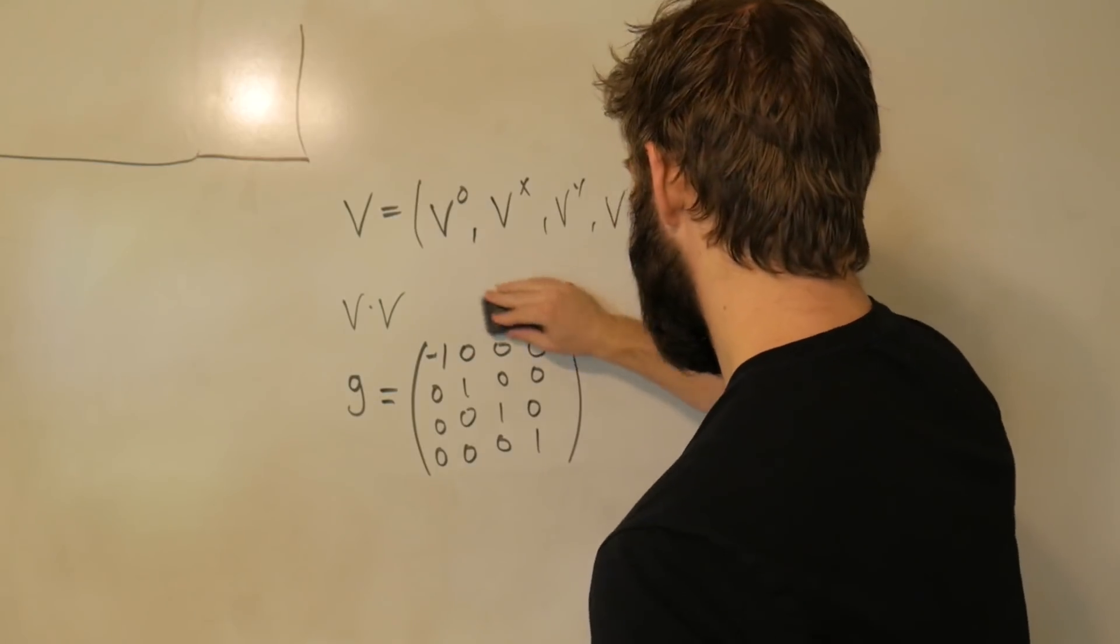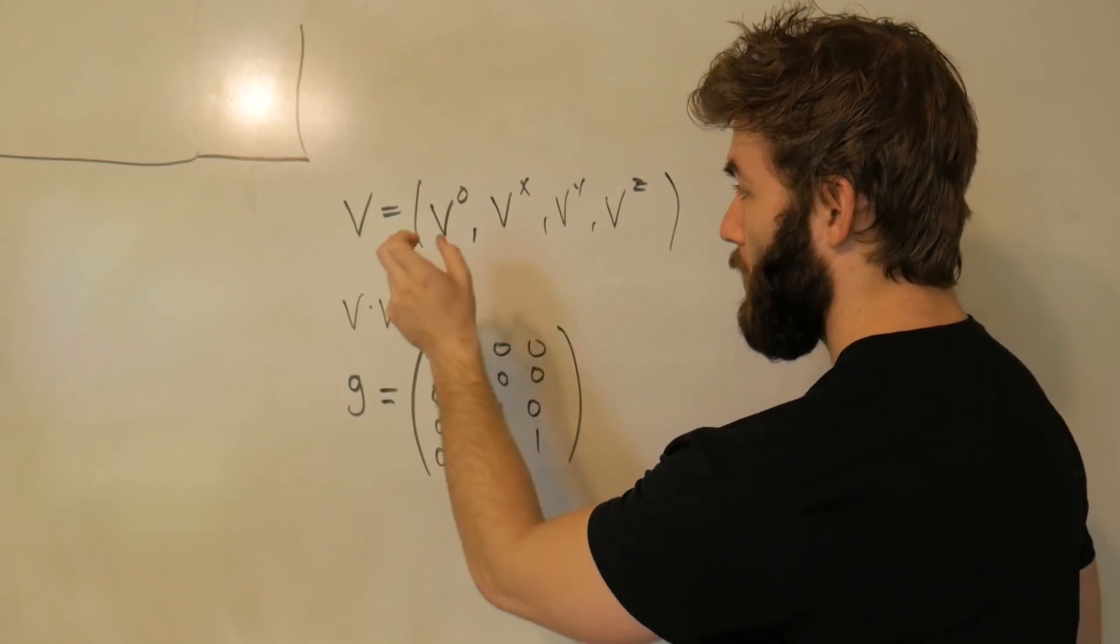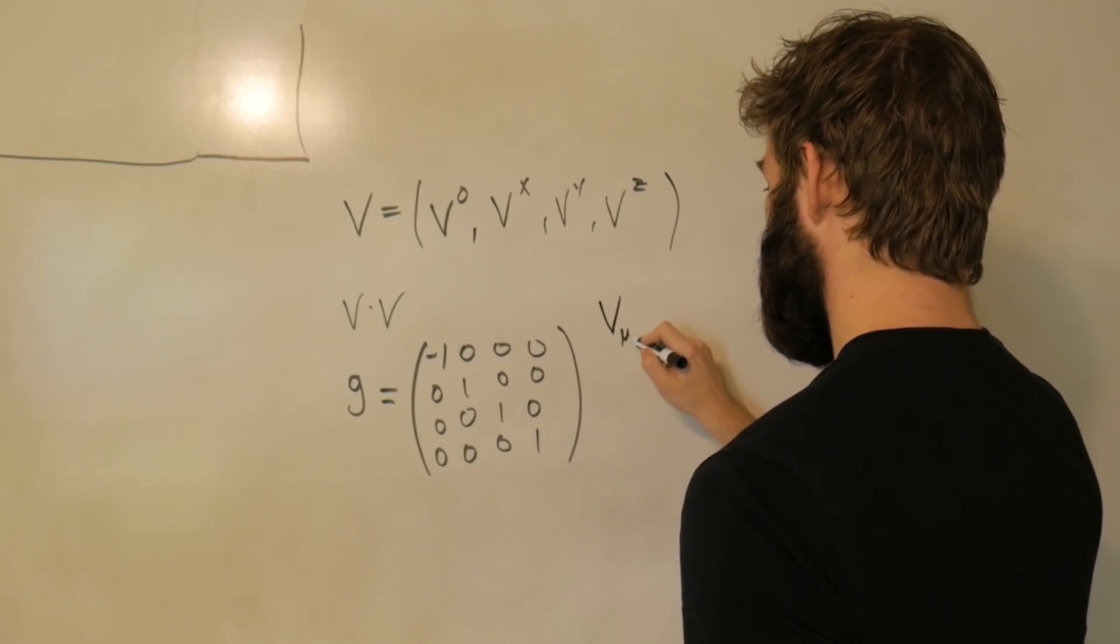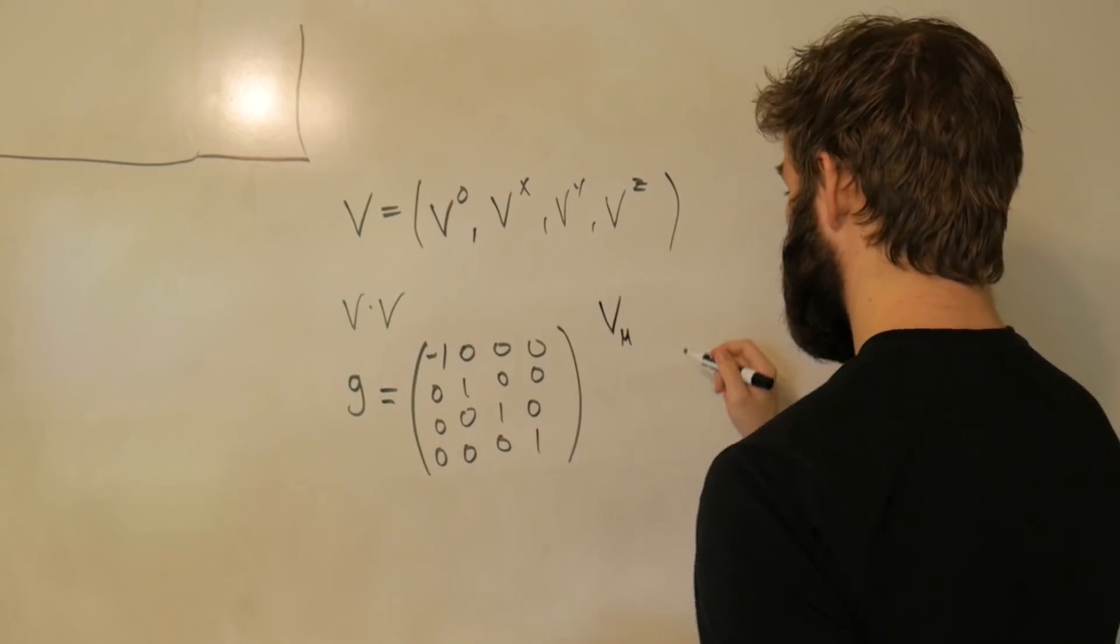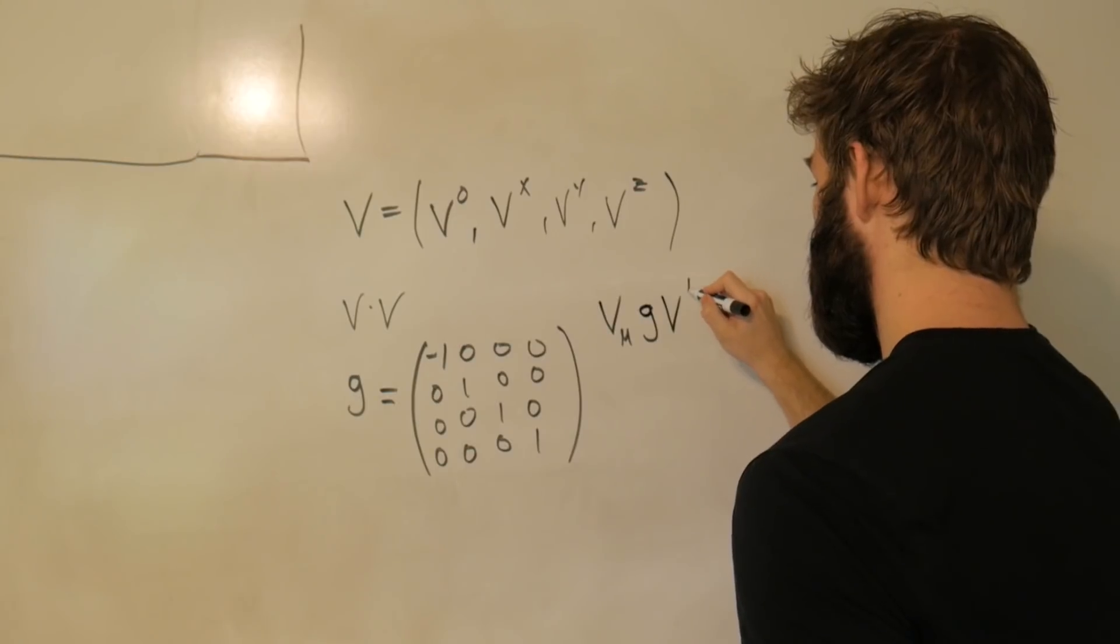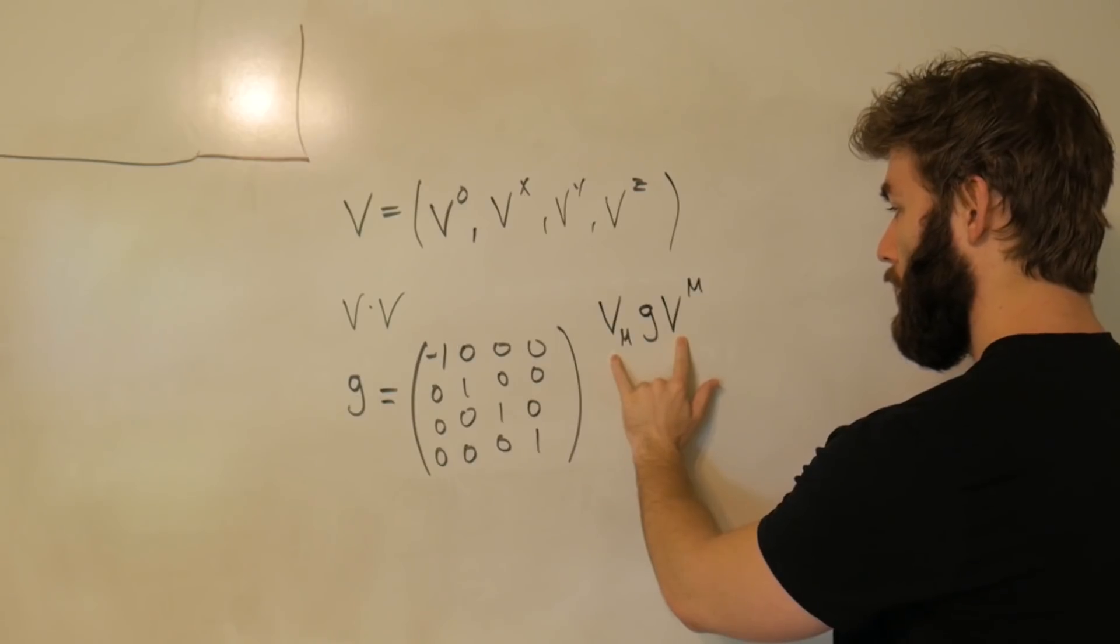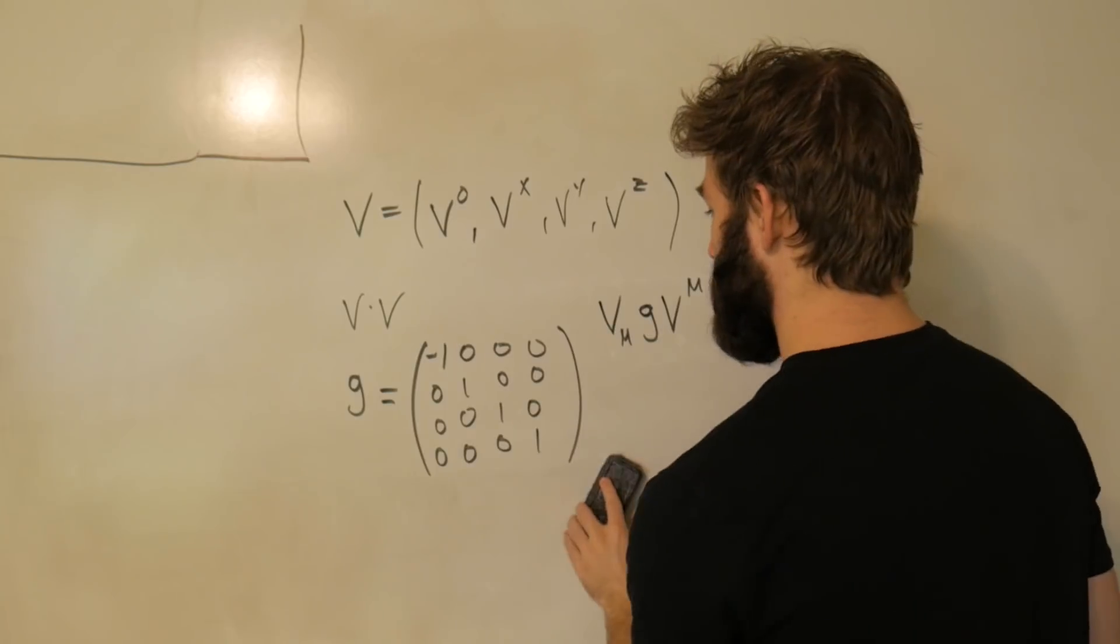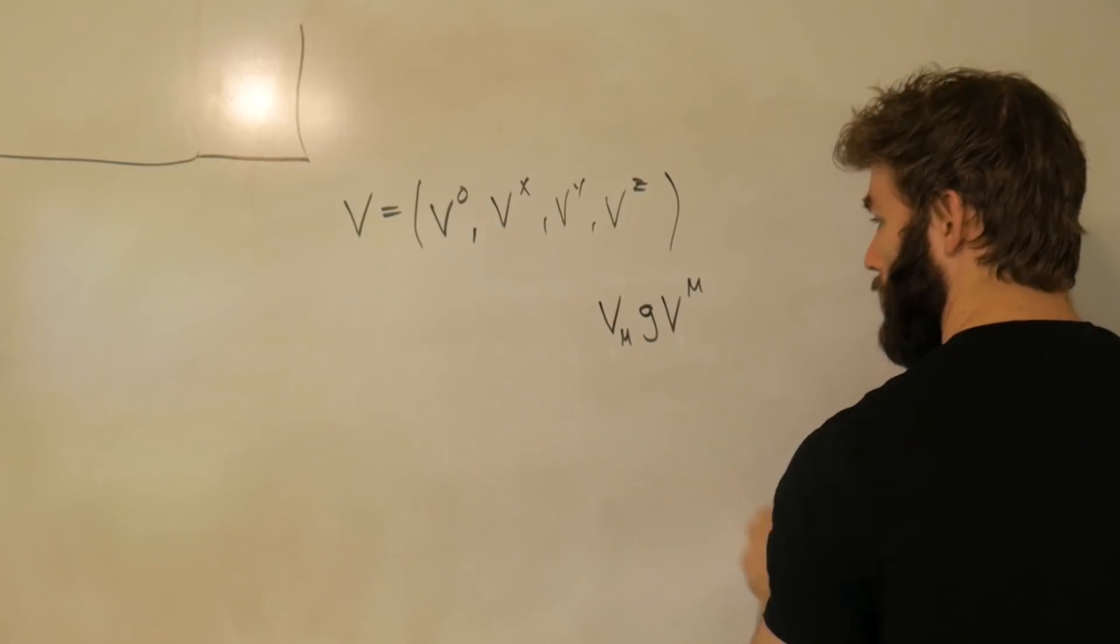So in order to do this dot product, what we need to do is we need to sandwich this metric in between this four vector. So we're going to do v, I'm going to label it as v_μ, telling us that we're using a row vector, this is just a convention, g sandwiched in, and then superscript μ corresponding to a column vector. And I'm going to go ahead and erase this metric here and write out what this means.